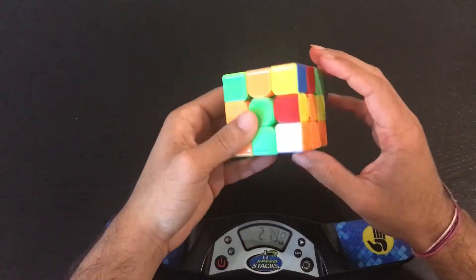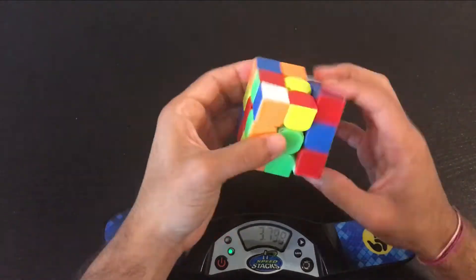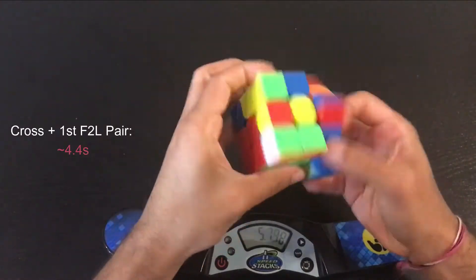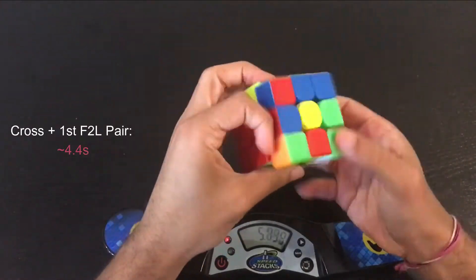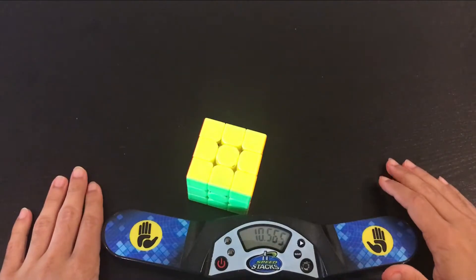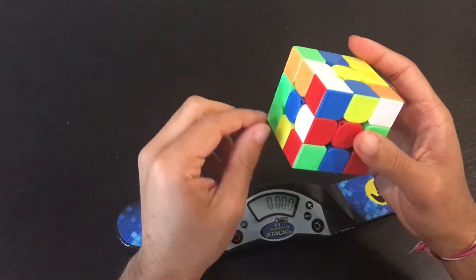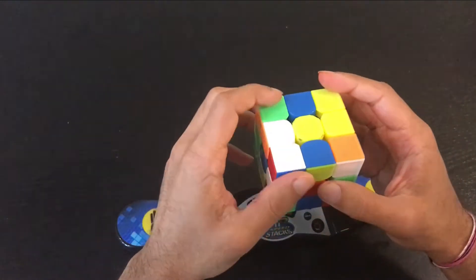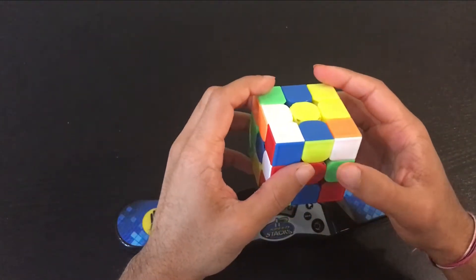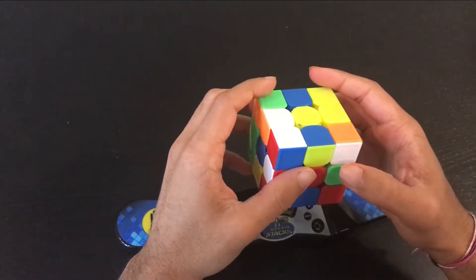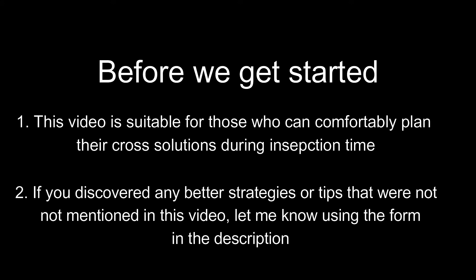Hey guys, in this video we'll be focusing on predicting your first F2L pair. As a CFOP cuber, you've probably reached the stage where you're good at the cross and F2L but not good at the transition between them. It's quite frustrating how much time you lose during those lengthy pauses, and this may be one of the fundamental reasons why you aren't sub-10.